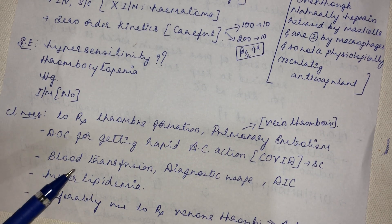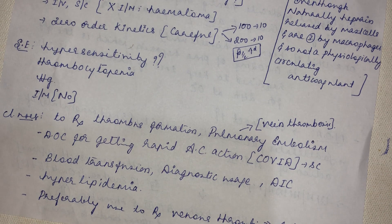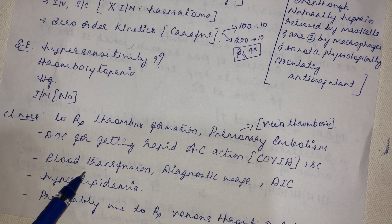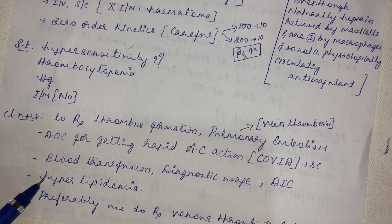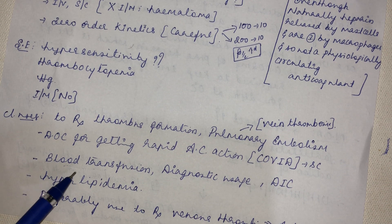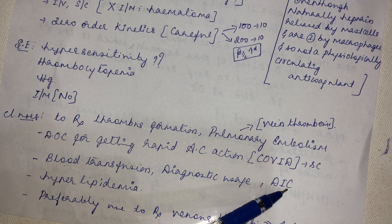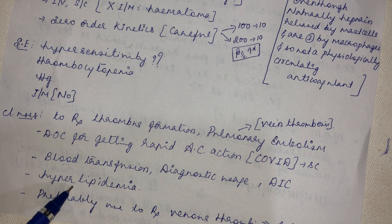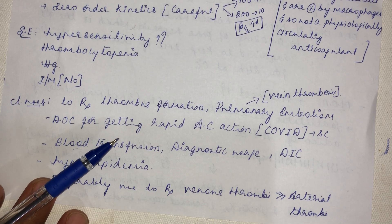Heparin can also be used for blood transfusion and is thus classified as both an in vivo and in vitro anti-coagulant. It is used for disseminated intravascular coagulopathy (DIC), for treating hyperlipidemia, and is preferred for venous thrombus over arterial thrombus formation.